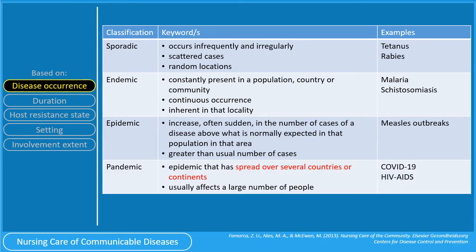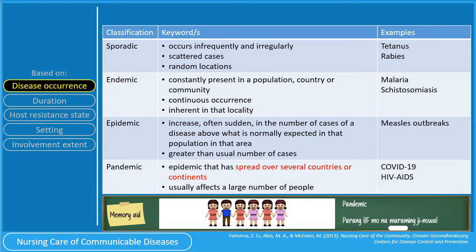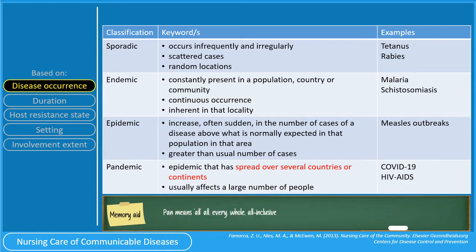In pandemic, the epidemic has spread over several countries or continents, and it usually affects a large number of people. Very good examples of pandemic are the ongoing COVID-19 and HIV pandemic. Multiple countries are involved. A better way of remembering that pandemic occurs in several or multiple countries is by knowing what the prefix 'pan' means — it means all, every, whole, or universal. Examples of medical terms with the prefix pan are 'pandemic,' which means universal epidemic, and 'pancytopenia,' which is a condition when there is a decrease in all formed elements.